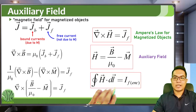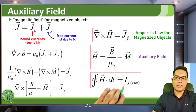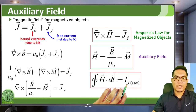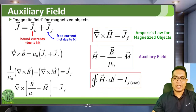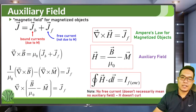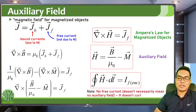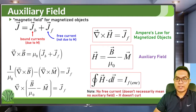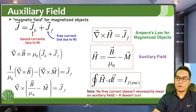The integral form is: the closed integral of H dot dL equals the free current enclosed. Note that if there are no free currents, it doesn't necessarily mean there is no auxiliary field — it only means the auxiliary field has no curl.